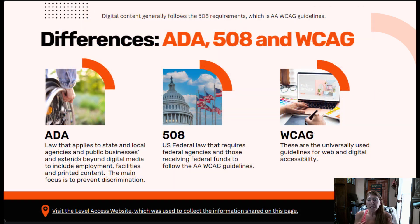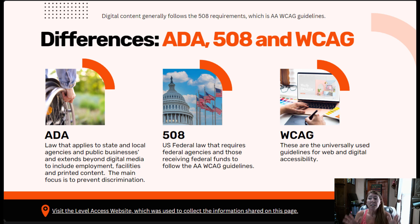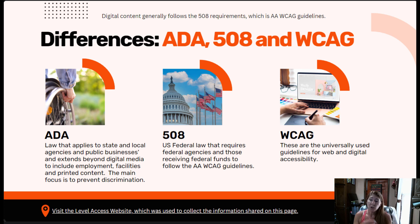The Americans with Disabilities Act is a law that was passed in 1990 and it applies to all businesses in the US. It states that no one can discriminate against someone with a disability. For example, everyone should be able to enter your building, so you need railings and ramps and automatic doors. These are important to prevent discrimination.